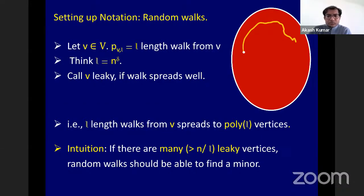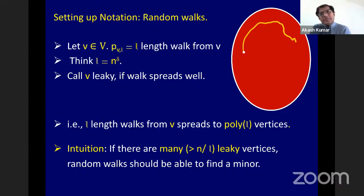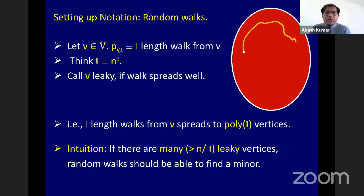A question about fake expanders: is there a graph-theoretic definition for them analogous to the definition of expanders? The definition is essentially that random walks mix rapidly from n^{0.99} sources. One can say something about the convergence rate and connections with the threshold rank of Arora, Barak, and Steurer, which in turn implies bounds on mixing time, but I'll not go there right now.